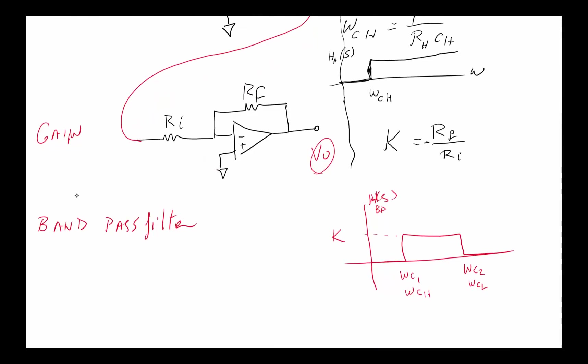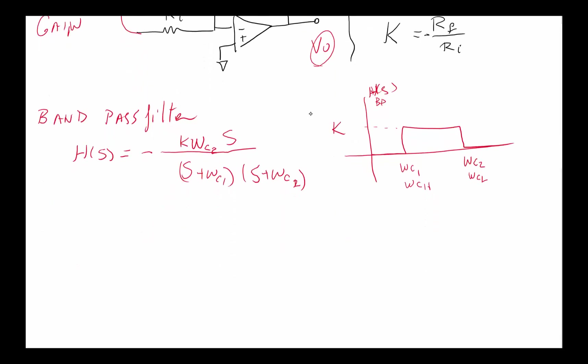H(s) for a bandpass filter will be—and this is very similar to the H(s) we had in a passive filter—K times omega c2, the higher frequency one which was the low pass filter, times s, divided by (s plus omega c1) times (s plus omega c2). This is a transfer function representing the bandpass filter.